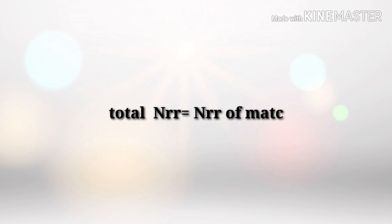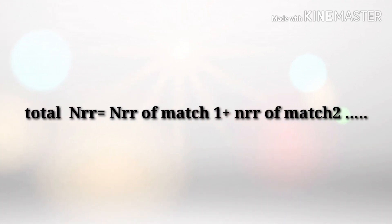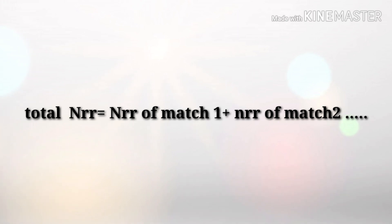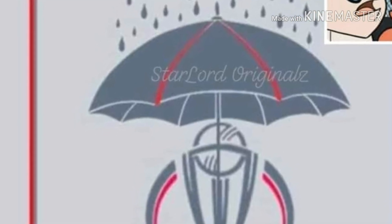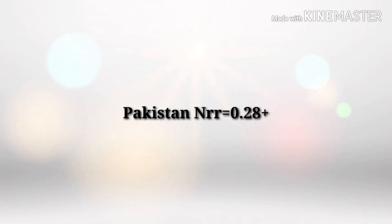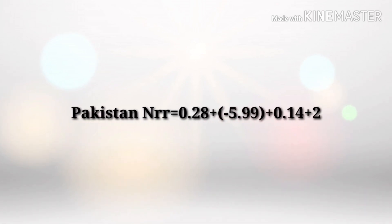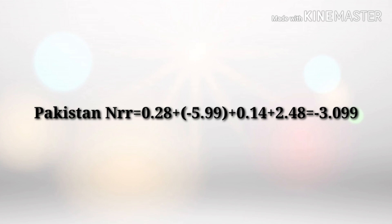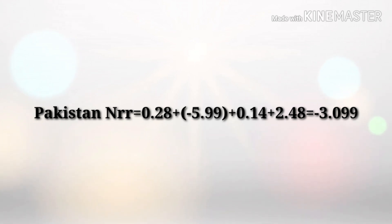The Net Run Rate calculated for the whole tournament is the sum of Net Run Rates of all matches played — Match 1 plus Match 2 plus Match 3, and so on. For Pakistan: the Net Run Rate in the first match was 0.28, in the next match it was minus 5.99, then 2.48, and against New Zealand it was 0.14.